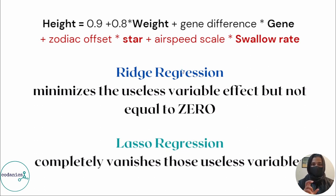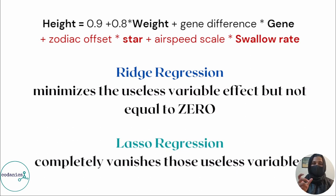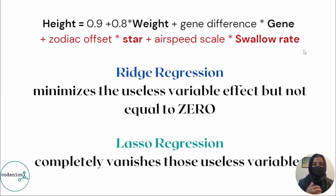So what is Ridge Regression? Ridge Regression uses slope squared with lambda. We shrink the size of the coefficients by adding lambda, which we can tune using cross-validation. If you use Ridge Regression, it will shrink the effect on the height prediction — for example, star sign and swallow rate — but it will not make those coefficients exactly zero. It will shrink the effect but will not eliminate it.